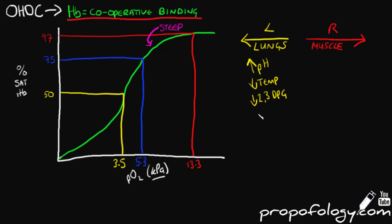A left shift is seen with increased pH, decreased temperature, decreased 2,3-DPG, decreased partial pressure of carbon dioxide, fetal haemoglobin, methaemoglobin, carboxyhaemoglobin, and stored blood. The reason to think of this as being like the lungs is that the lungs are alkalotic due to low CO2 levels and lower temperature compared to the muscular parts of the body — this helps to remember the factors better. Importantly, a shift to the left aids the uptake of oxygen and holding on to it.